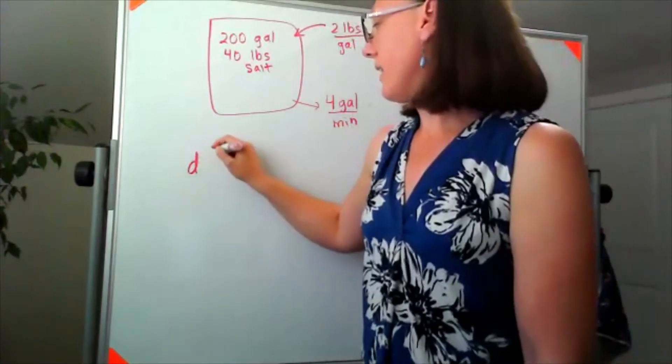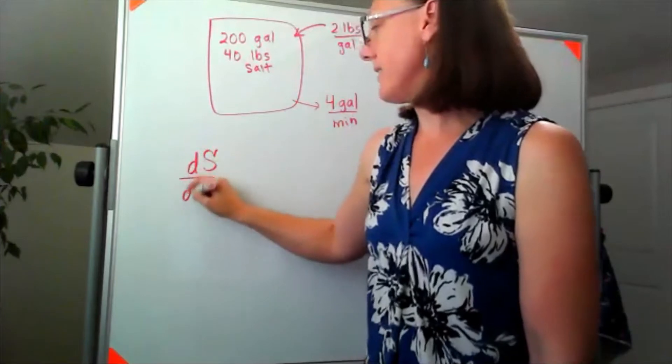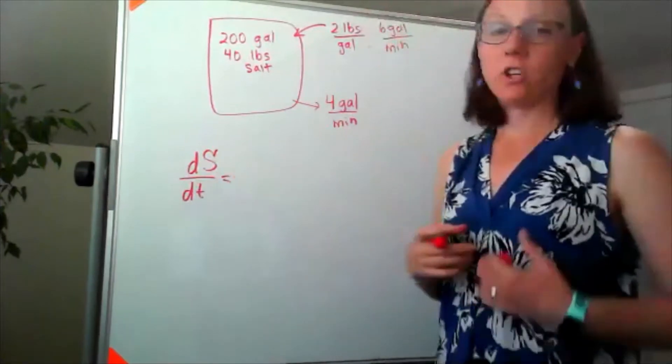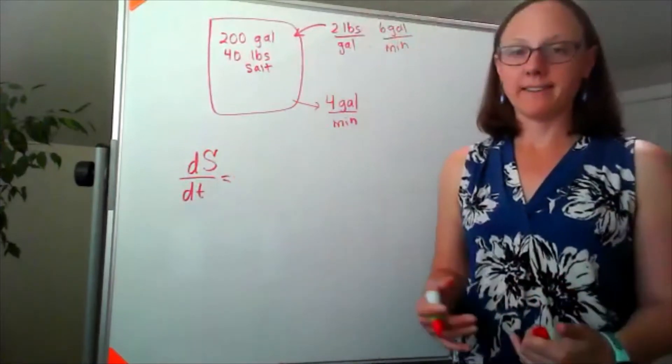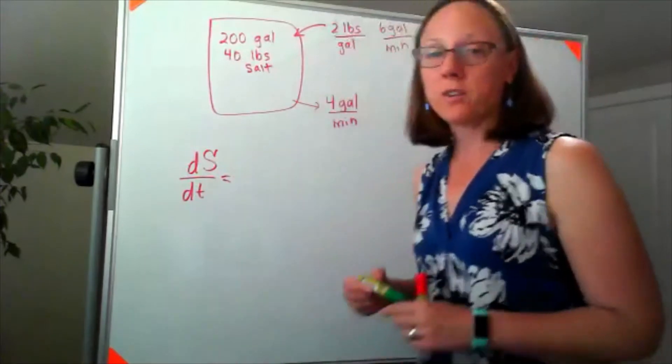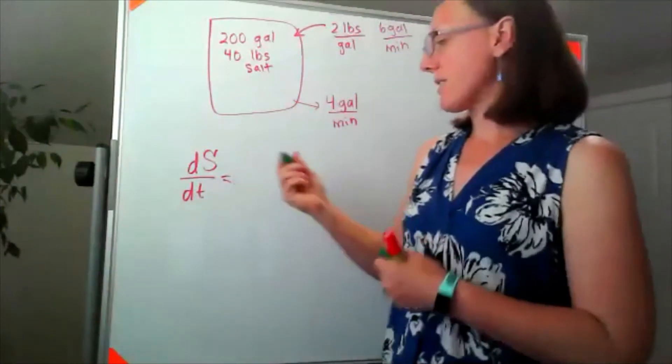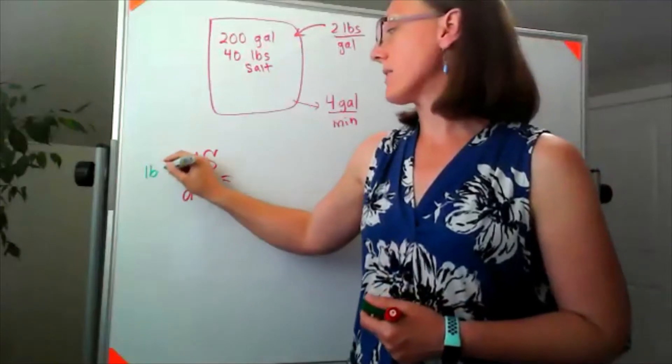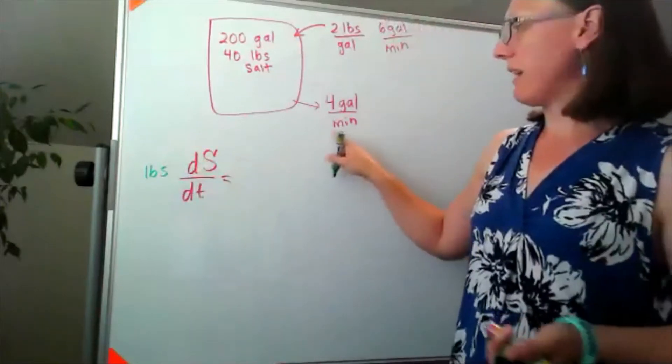So ds/dt, I know this should be stuff coming in minus stuff going out. Just to make sure that our units work out right, our units of salt in this problem are pounds and the units of time that we've been given are minutes.